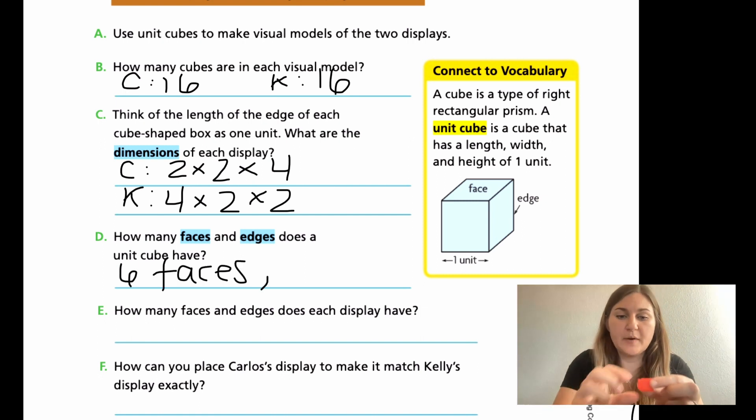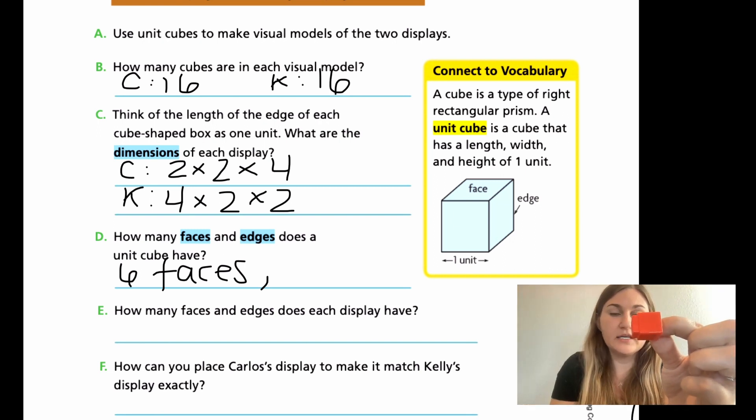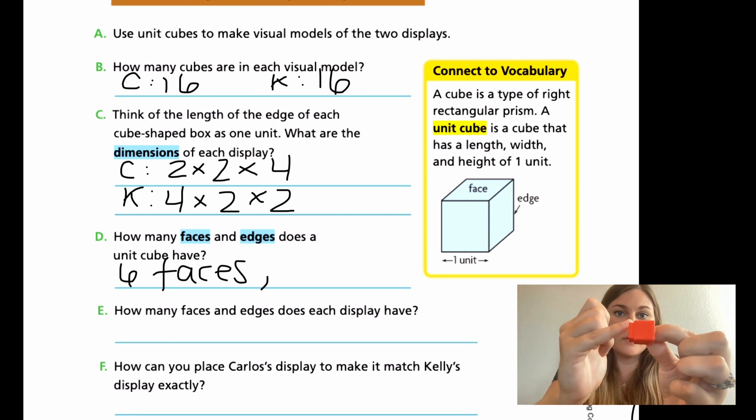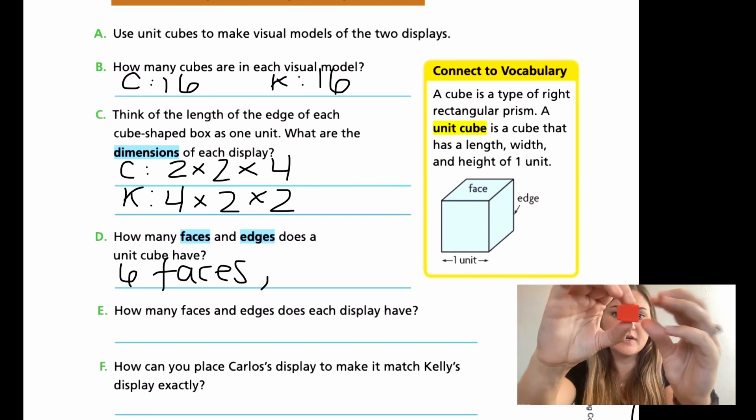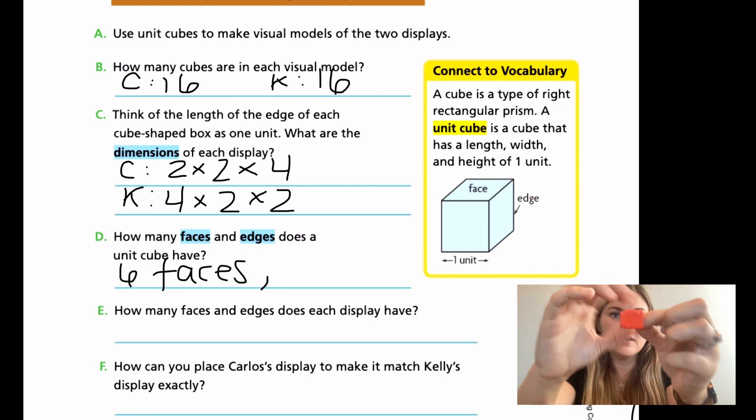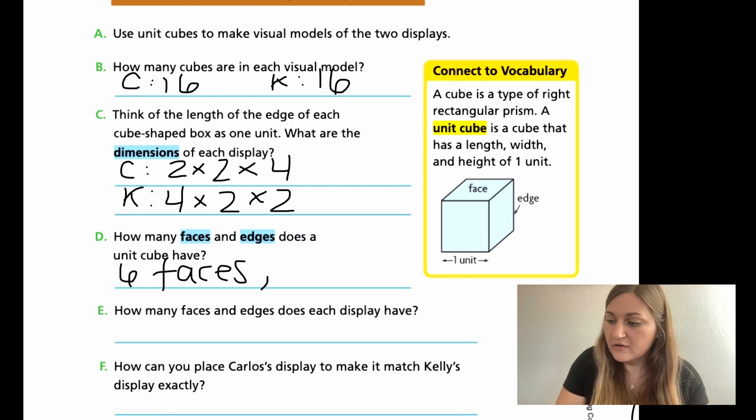And then how many edges do I have? If I'm looking horizontally, I have one, two, three, four horizontal. And then if I'm looking vertically over here, I have one, two, three, four. But I also have this side, one, two, three, four. So on all of the sides, I have four. So I have four here, four here, and four here. So one, two, three, four, five, six, seven, eight, nine, 10, 11, 12. So I have 12 edges.